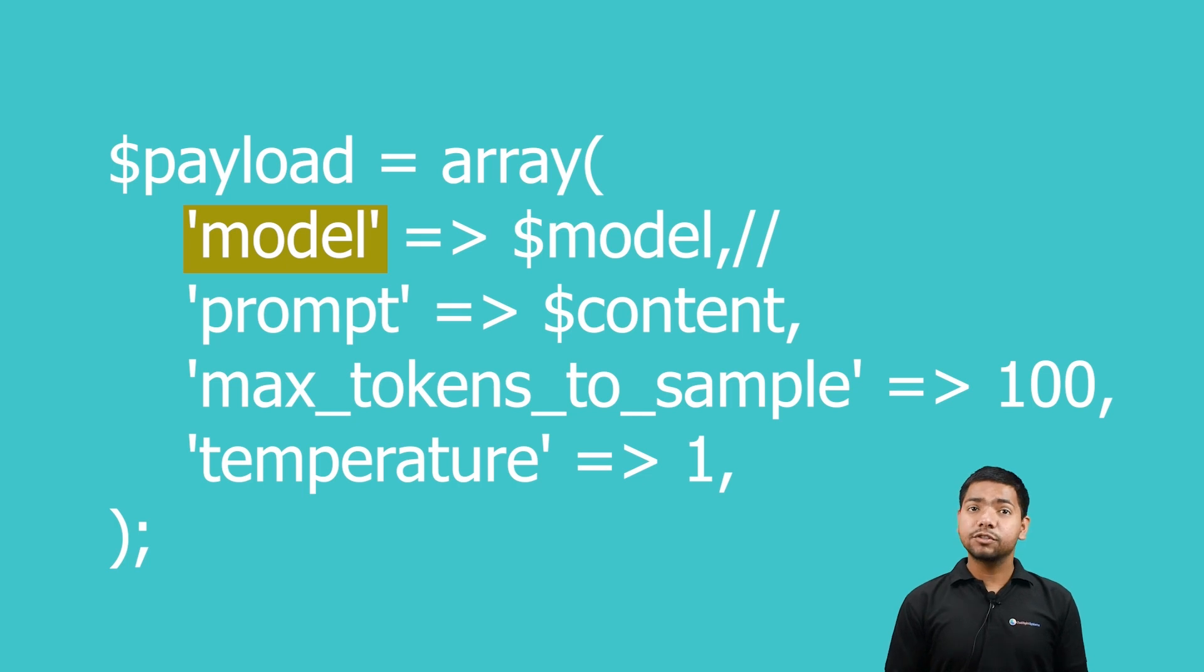The second component is prompt. This line sets the prompt key in the payload array to the value stored in the content variable. The content variable likely contains the text prompt or starting point for the text generation process. This is the input provided to the API, which it will use as the basis for generating the desired output.